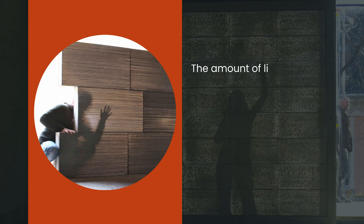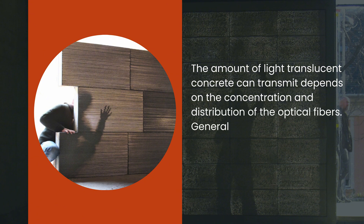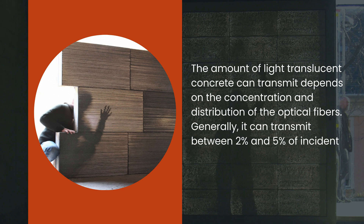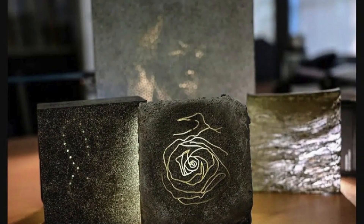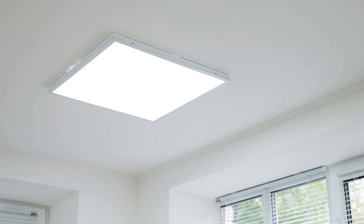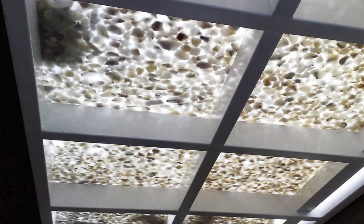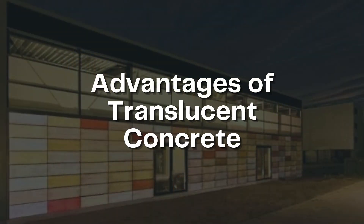Light Transmission Capability. The amount of light translucent concrete can transmit depends on the concentration and distribution of the optical fibers. Generally, it can transmit between 2% and 5% of incident light. While this figure might seem low, the visual effect is remarkable, especially when the material is exposed to intense light sources such as sunlight or LED lights. This capability not only adds aesthetic value, but also contributes to energy savings by reducing reliance on artificial lighting.